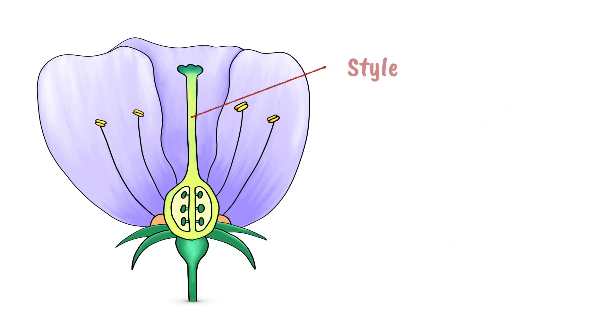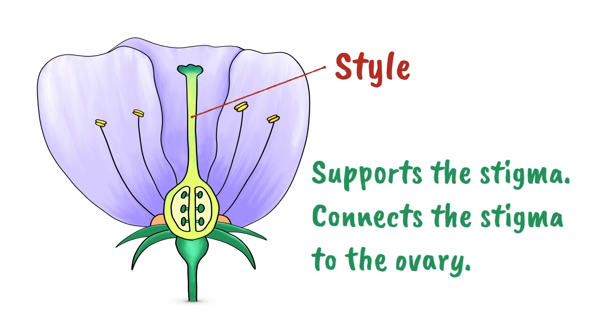This long structure is called the style and its job is to support the stigma and to connect the stigma to the ovary.